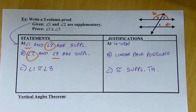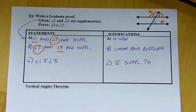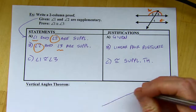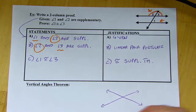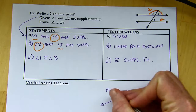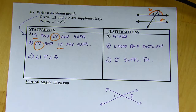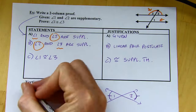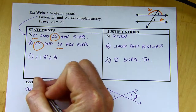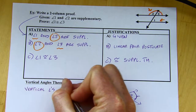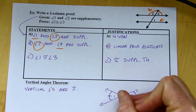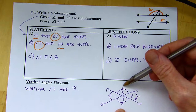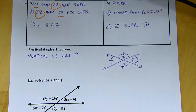One more theorem — the Vertical Angles Theorem — which I've mentioned a few sections ago when vertical angles first came up. This is when you have two intersecting lines; the angles across from each other are the vertical angles. Vertical angles are congruent — that's the theorem. There's another pair of vertical angles in the diagram; those two are also congruent. It's not that all four angles are congruent — this pair is congruent and this pair is congruent.